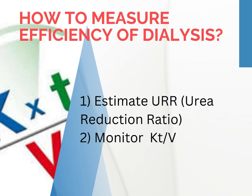Now let's talk about how we measure dialysis effectiveness. We have two key players here: one is Urea Reduction Ratio, and the other is KT over V. If you are thinking 'great, more formulas to memorize' — don't worry. I promise to keep it very simple and relatable.